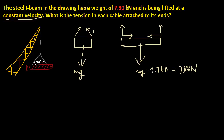That 7300 newtons equals the upward force exerted by the two cables. Since there are two cables, we write 2. The angle from vertical is 70 degrees, so the vertical component uses sine of 70. Our equation is: 2 × T × sin(70°) = 7300 newtons, since the system is moving at constant velocity and acceleration is zero.